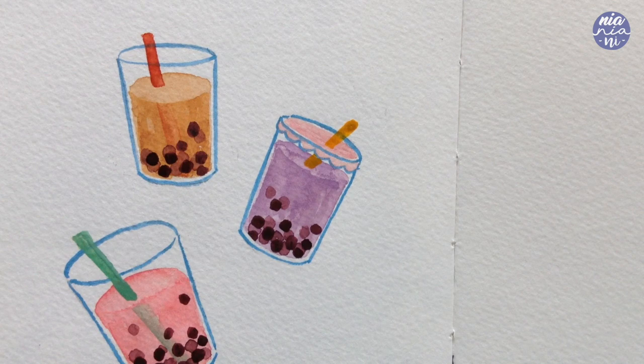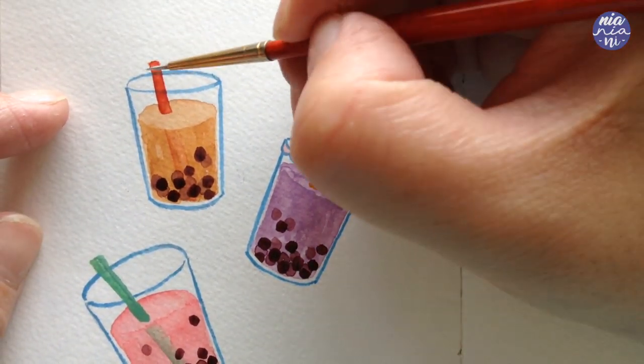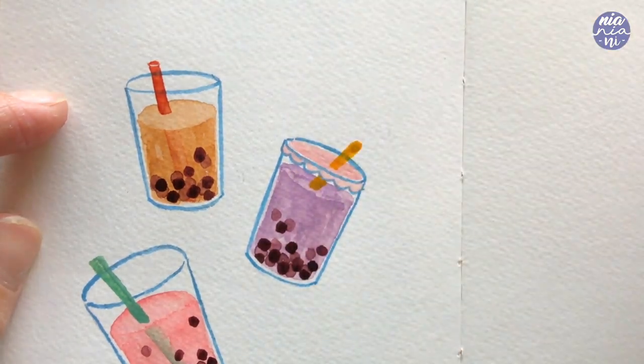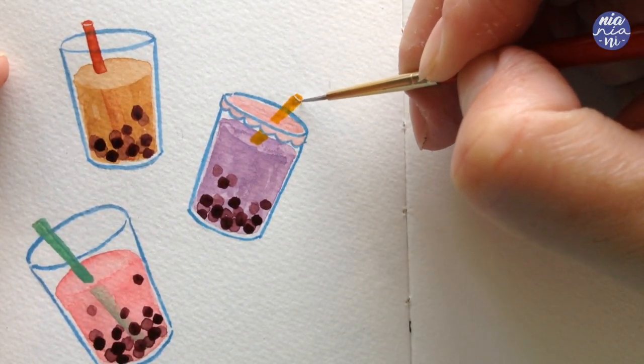So that's pretty much it to finish off these cups of bubble tea. I'm going to add highlights. You can either use white gouache or white pen. I'm going to show you both.